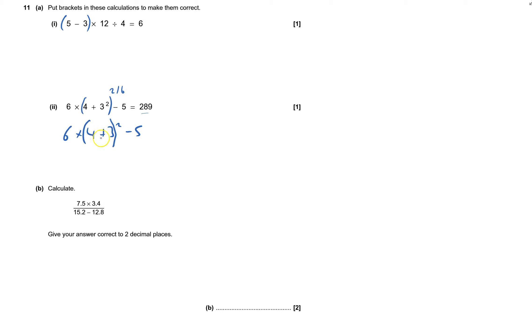6 times, then 4 plus 3. That's 7 squared and 6 times 49. Take away, that's right. That's the one. It's not in that place there. We need the brackets around the 4 plus 3 and before the squared sign. And then that will work.